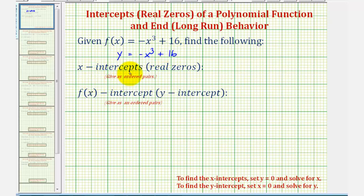Now to find the x-intercepts, or again the real zeros of any function, we set y equal to zero and solve for x. If we're using function notation here, we'd substitute zero for f of x, or using y, we substitute zero for y and solve for x. So in either case, to find the x-intercepts, we want to set up and solve the equation zero equals negative x cubed plus 16.